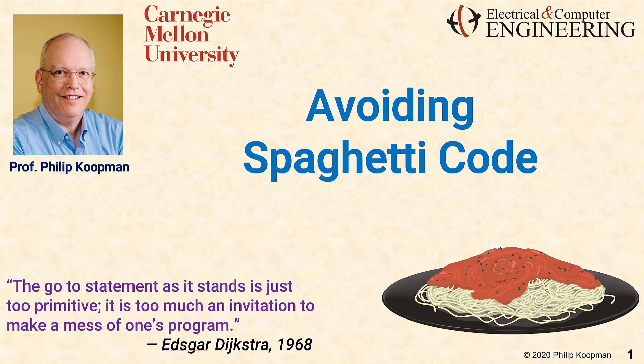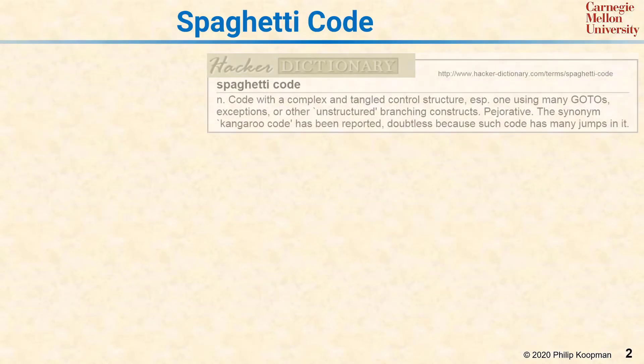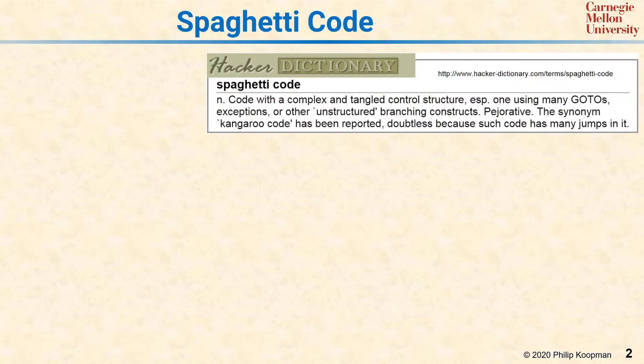This is Phil Koopman with a tutorial on avoiding spaghetti code. You get spaghetti code when you have code that has a complex or tangled control structure. Historically, this came about through undisciplined use of go-to statements and other unstructured coding practices. With modern structured programming languages, crazy go-to structures are less common, but you can still get spaghetti code easily enough if you aren't careful.